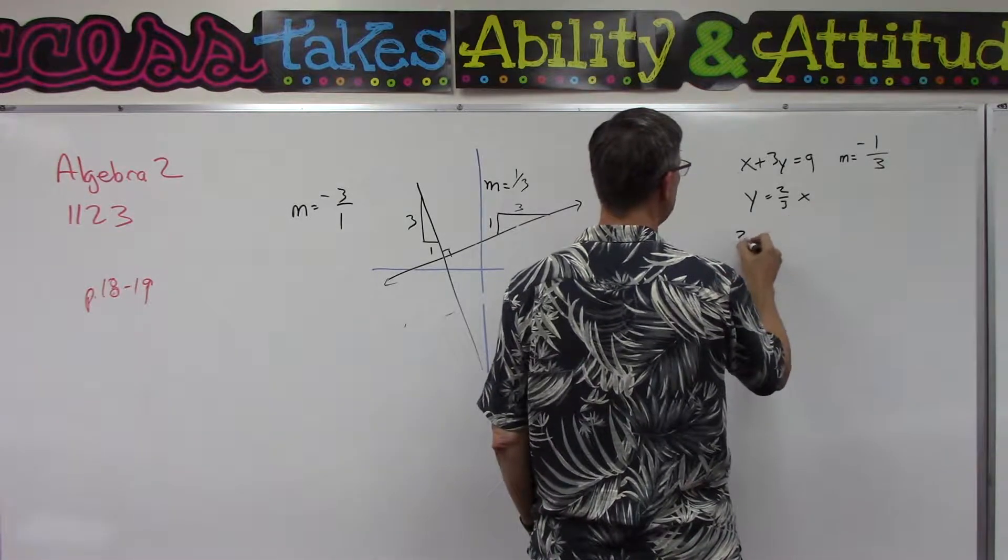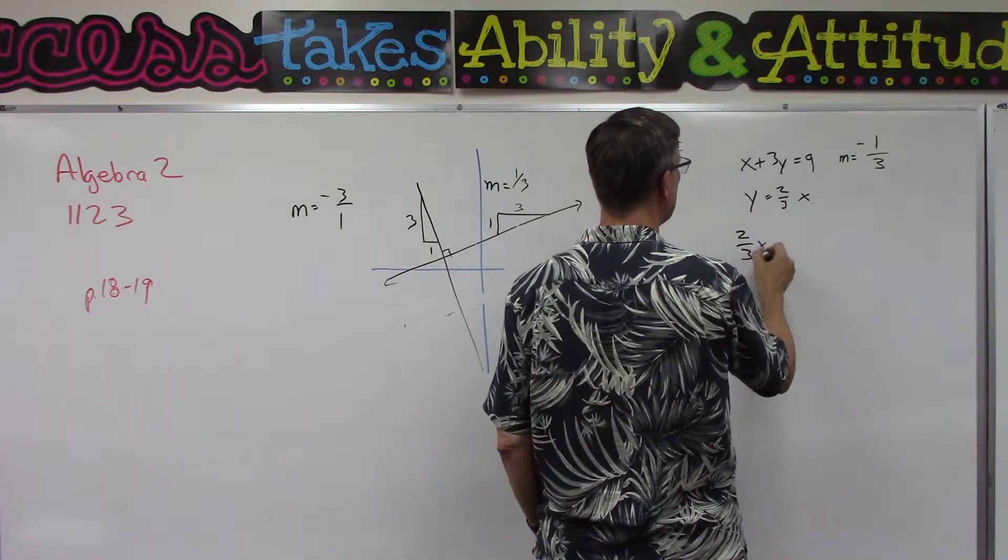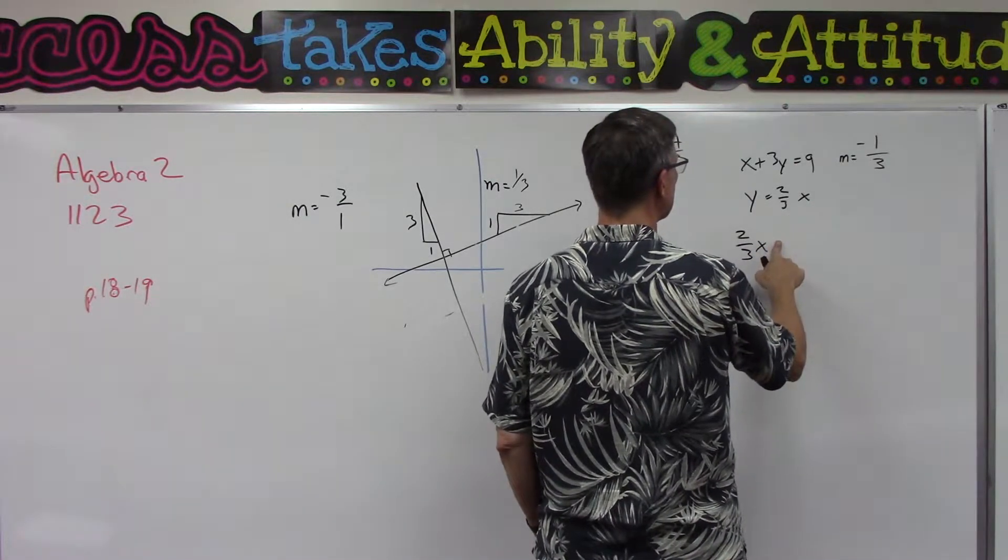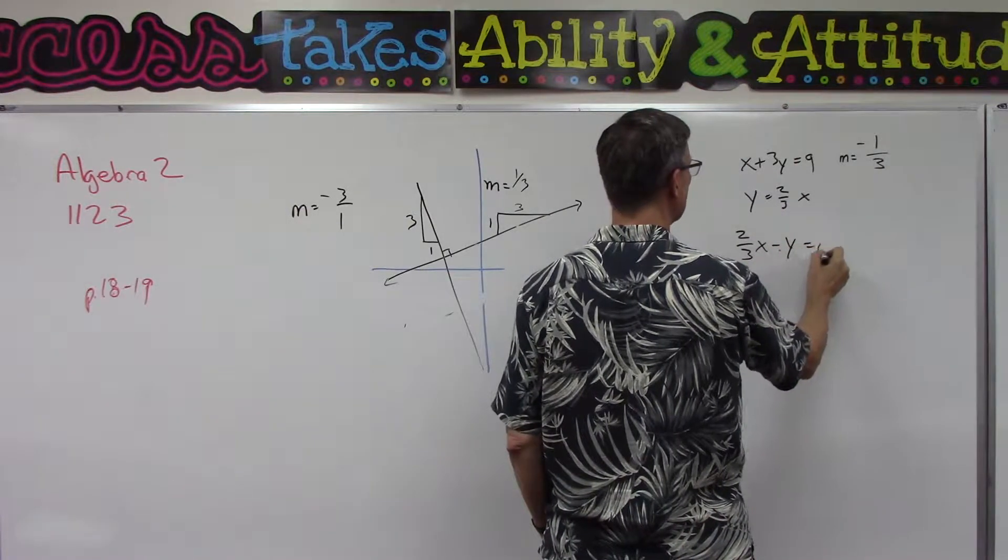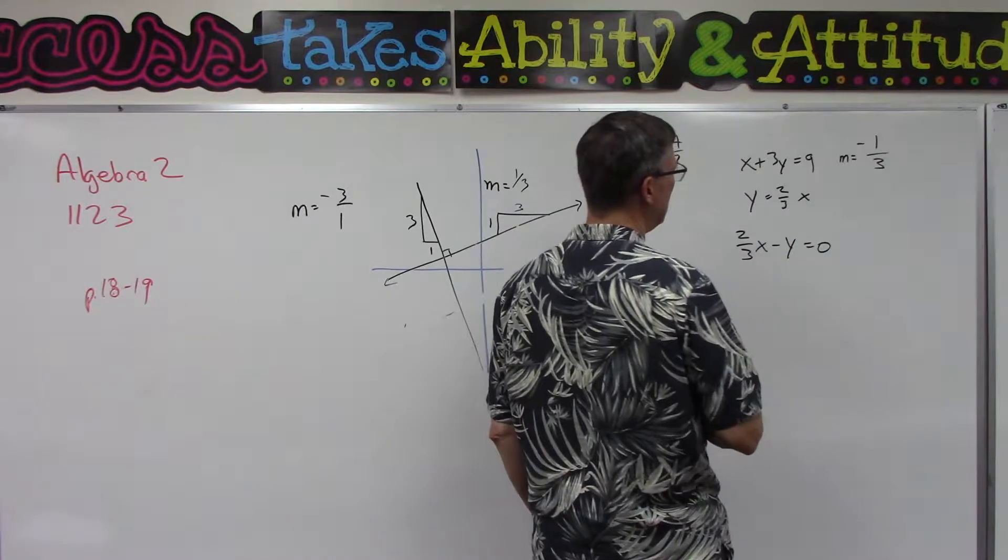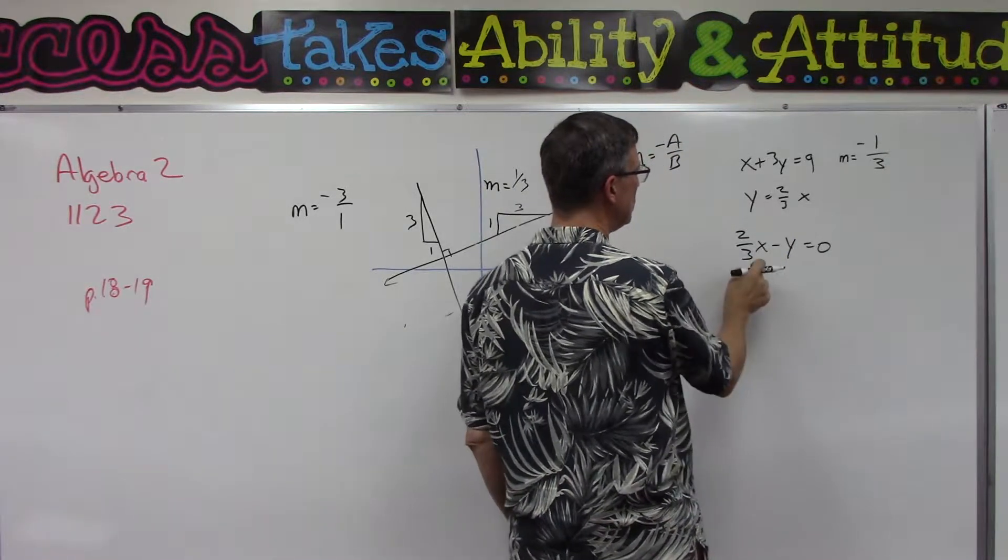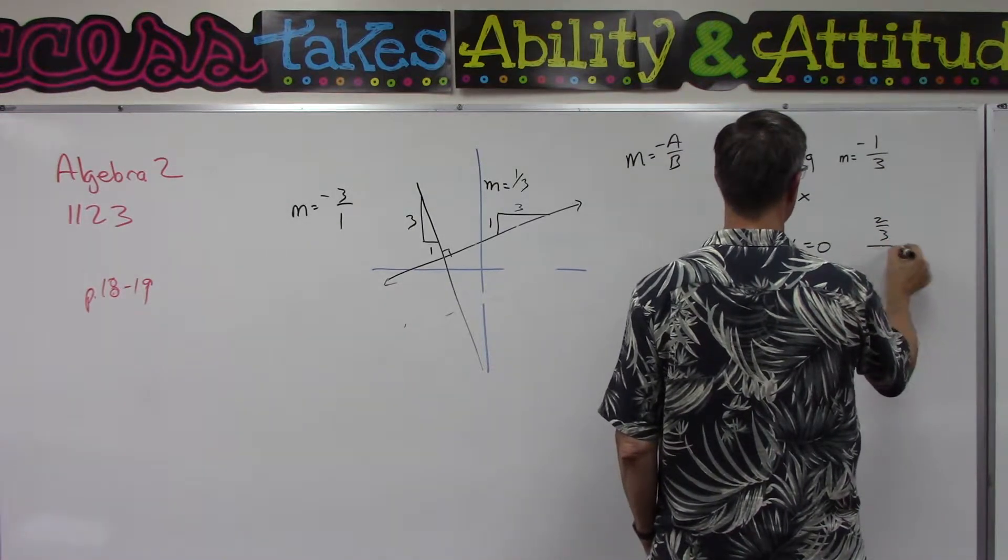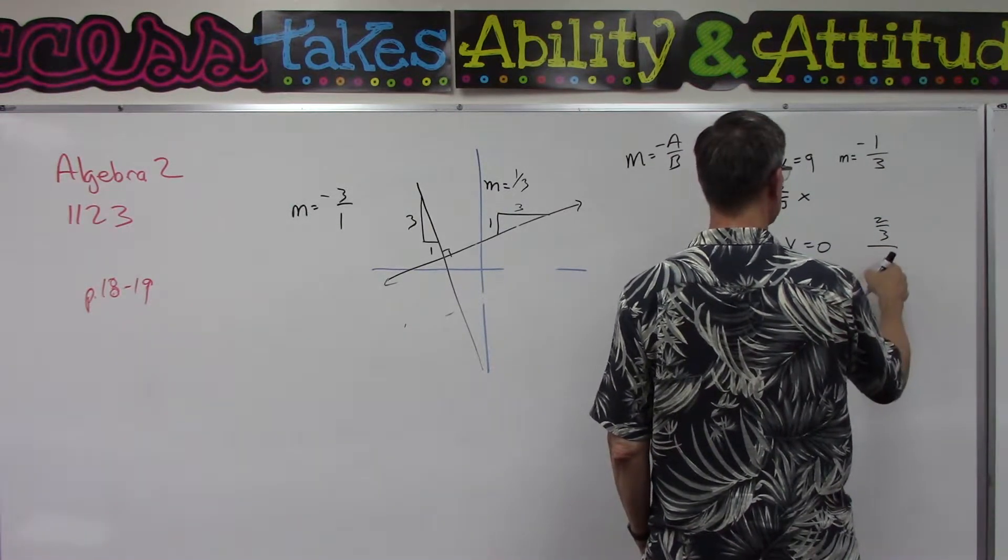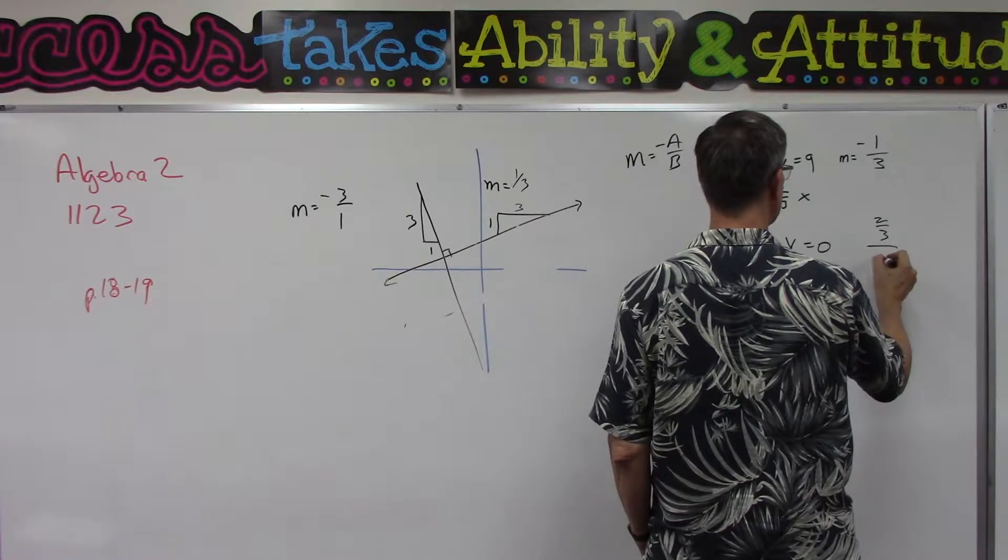This one I need to do, two-thirds x, okay, bring the y over, so minus y equals 0. So then to determine the slope we're going to do the two-thirds over x, or over the y which is negative 1.